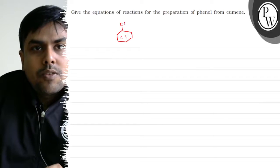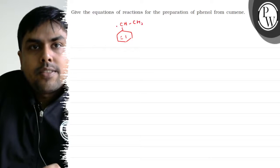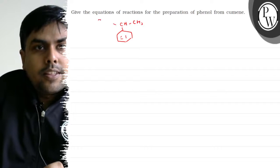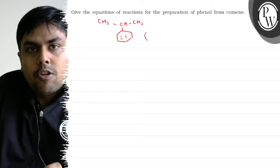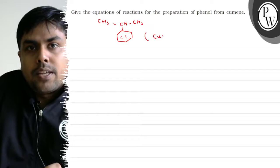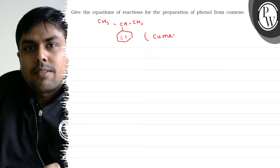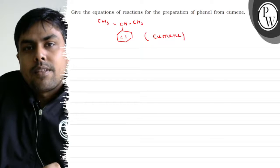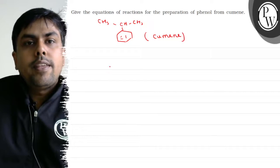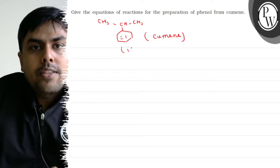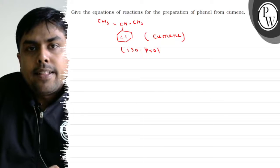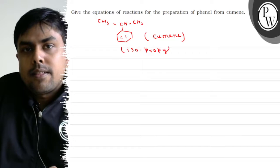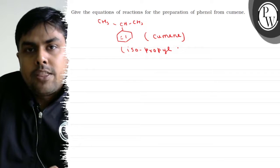The structure of cumene is a benzene ring with a CH(CH₃)₂ group attached. We also call cumene isopropylbenzene.